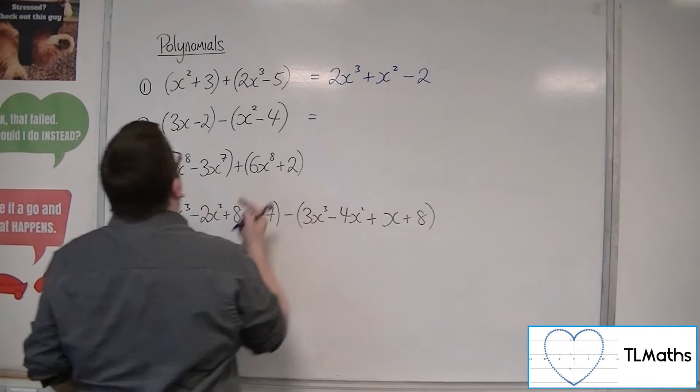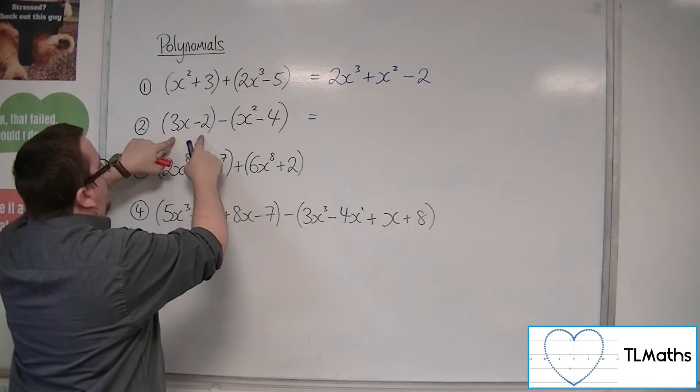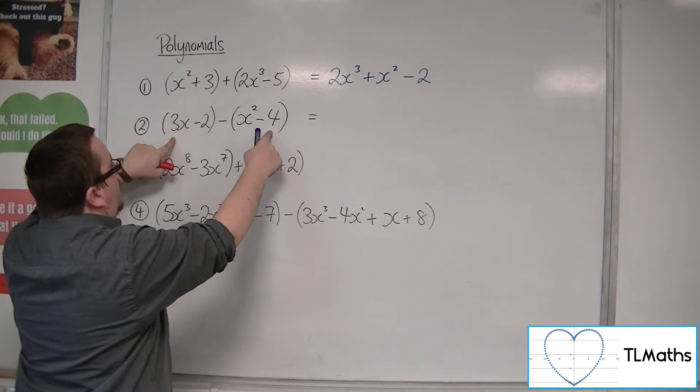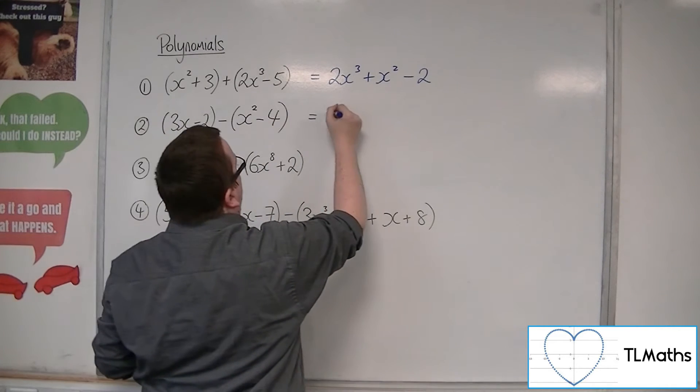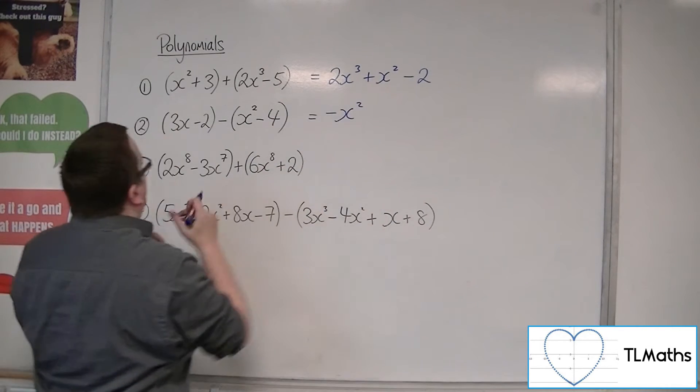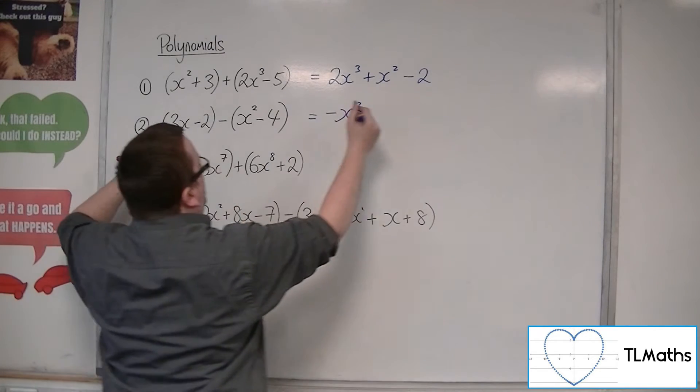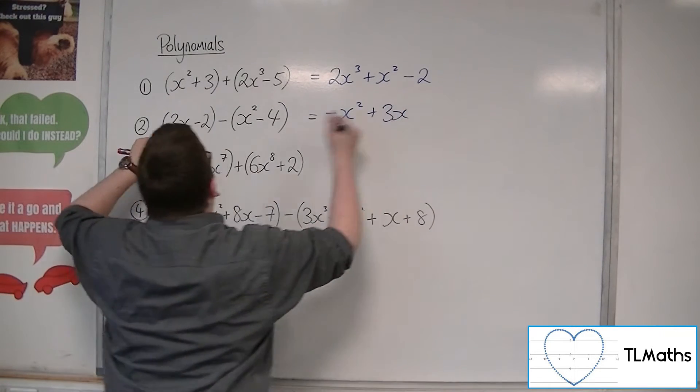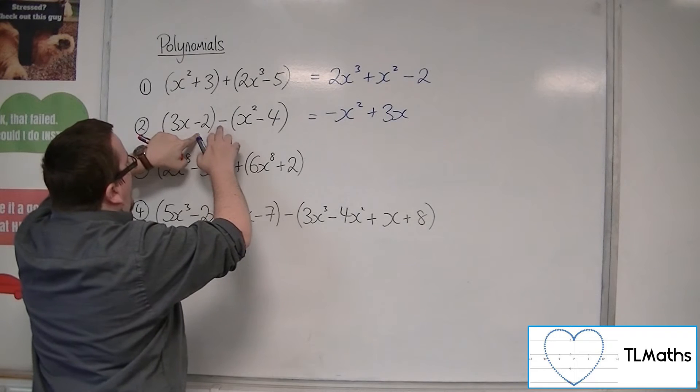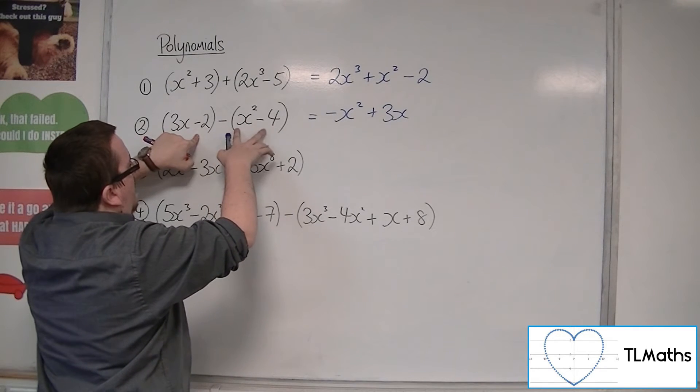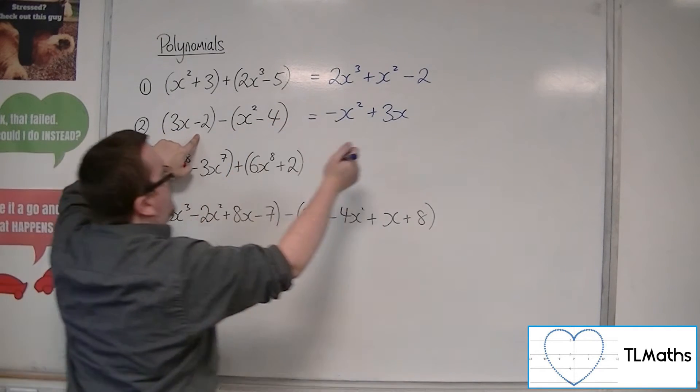So for number 2, we've got 3x minus 2 take away x squared minus 4. So I'm going to have this minus x squared. For singular x's, I've got the 3x. And then I've got minus 2 take away minus 4, so plus 4. So minus 2 plus 4 is plus 2.